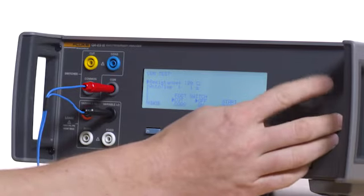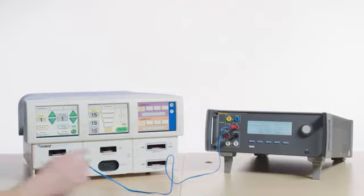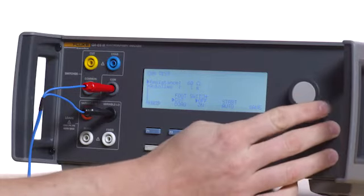Decrease resistance to 60 ohms and once again confirm the REM indicator is green. Increase the resistance to 77 ohms.